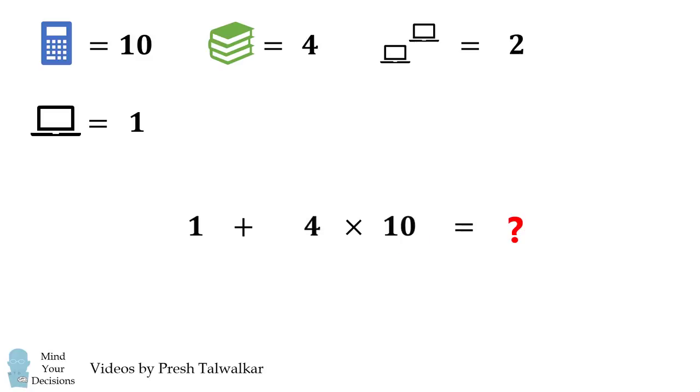We substitute in the values of 1, 4, and 10. Then we remember to multiply 4 and 10 first by the order of operations. So we get 1 plus 40, and then our final answer is equal to 41. This is the official answer.